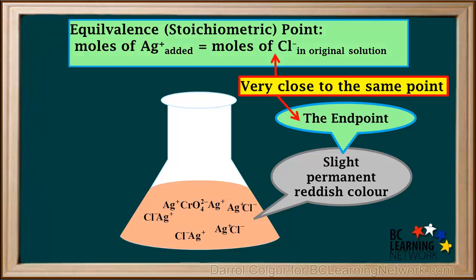In most titrations, if the proper indicator is used and the technique is good, the equivalence point and the endpoint are very close, and they can be assumed to be the same point.